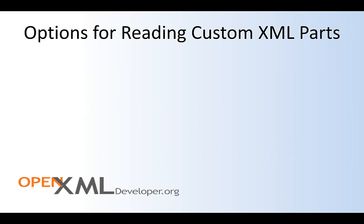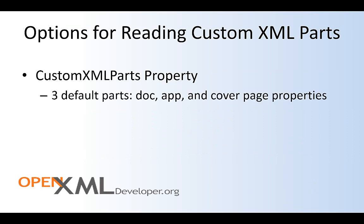When reading custom XML parts in Word VBA, we have a couple of options. The first one is the custom XML parts property. From here we can access the custom XML parts that are by default part of a Word document — these are the doc, app, and cover page properties. We can also access the parts in the custom XML folder.